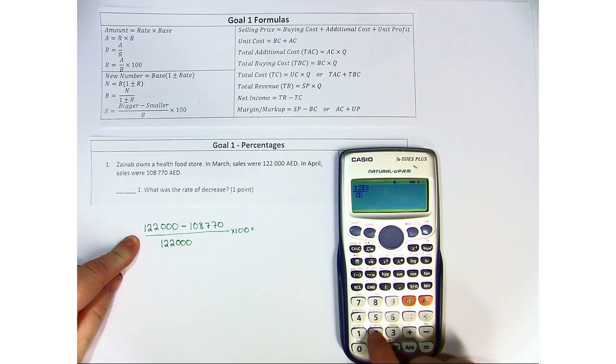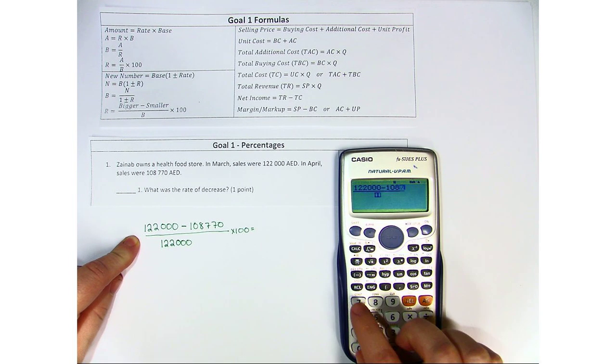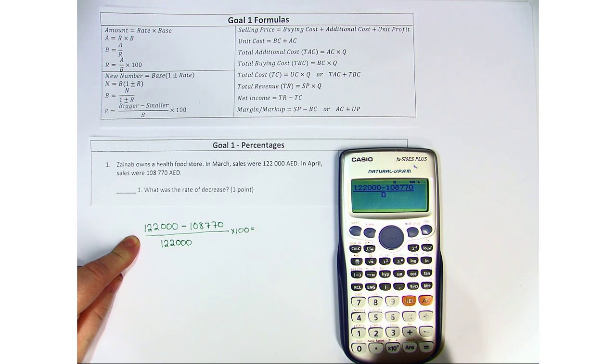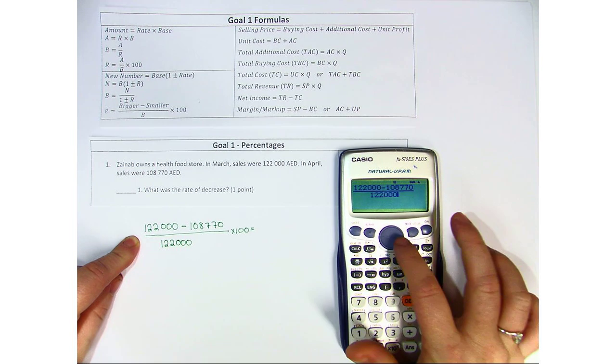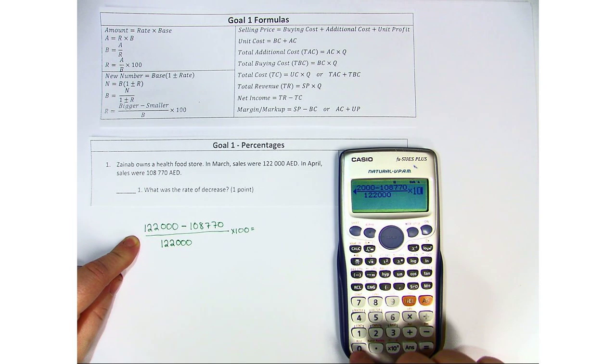We're going to do 122,000 minus 108,770. And we'll put that divided by 122,000. And then at the end, multiply by 100.